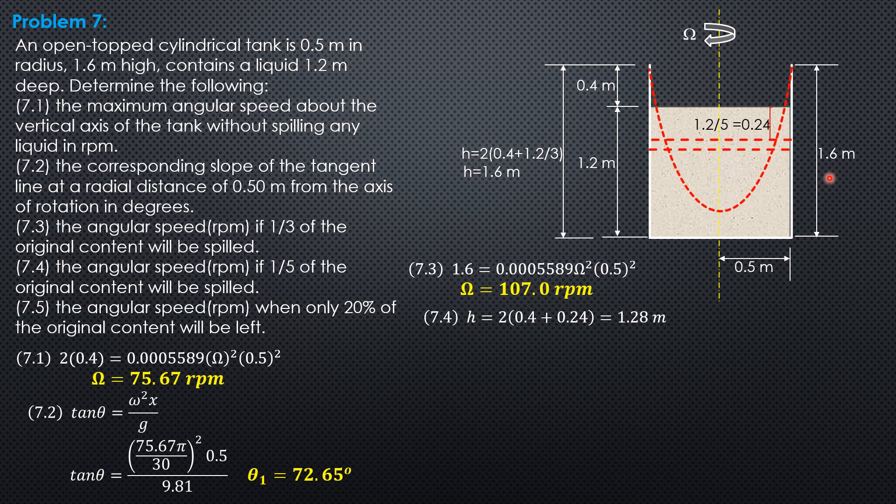So that's automatic, the height. And it is still within the cylindrical tank. So therefore, 1.28 is equated to this formula here. 0.0005589 omega square 0.5 square. So the angular speed for part 4 is 95.71 revolutions per minute.